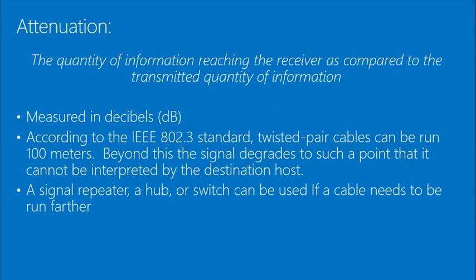Physical and wireless networks both have to deal with attenuation — signal degrading over distance. As distance increases, the signal becomes weaker. Similar to the Doppler effect: as a sound source moves further away it gets quieter because the sound has to travel more distance. That's a simple analogy for how attenuation works in networking.